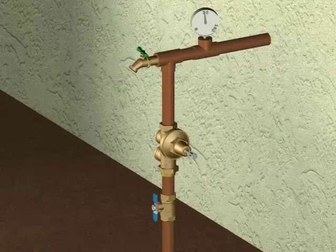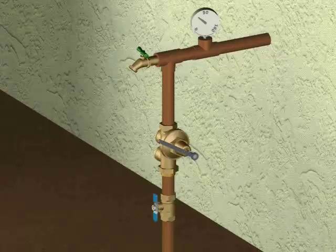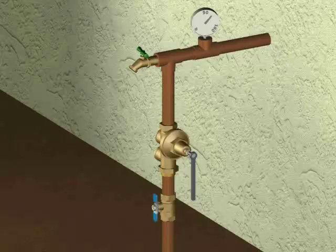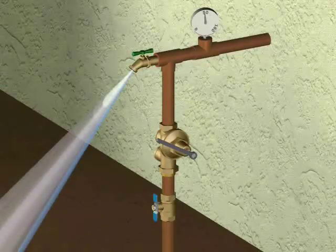If necessary, adjust your outlet pressure to 50 psi. The outlet pressure is raised by turning the bolt clockwise into the bell housing. To lower your outlet pressure, turn the bolt counterclockwise and then open a faucet to relieve pressure and check the actual setting.